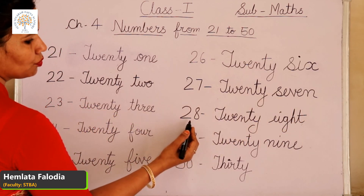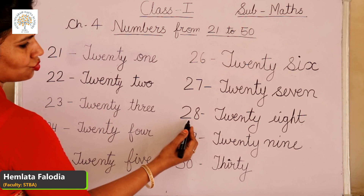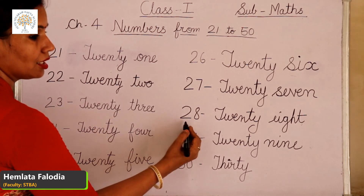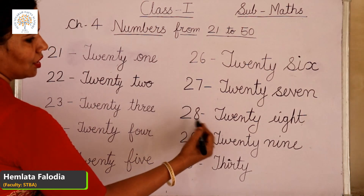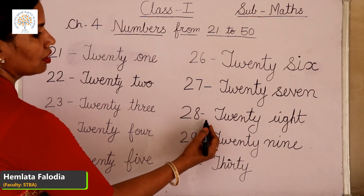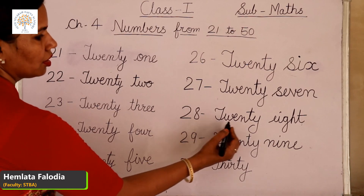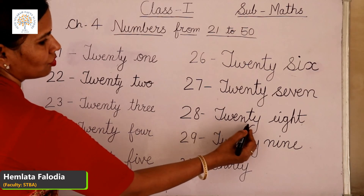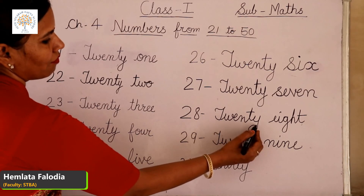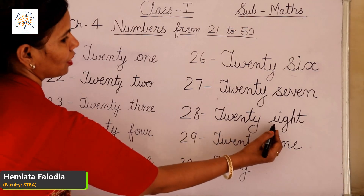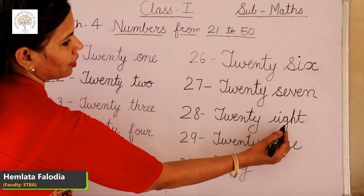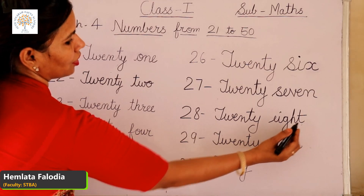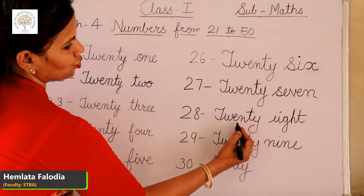Now come to the next, which is 28. 20 plus 8 comes to 28. T-W-E-N-T-Y, 20, E-I-G-H-T, 8. This means 28.